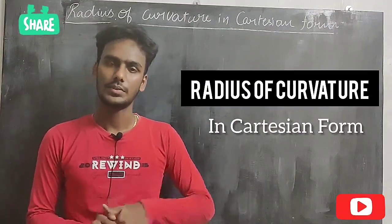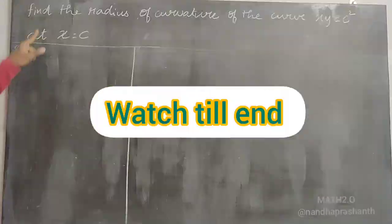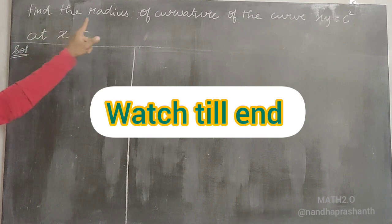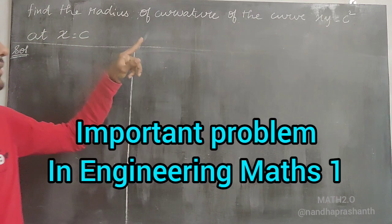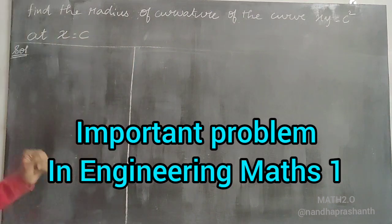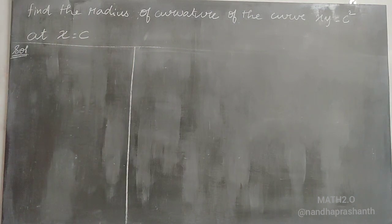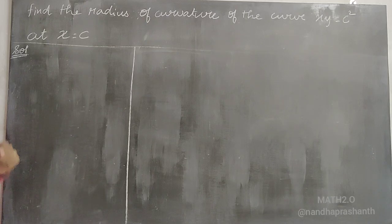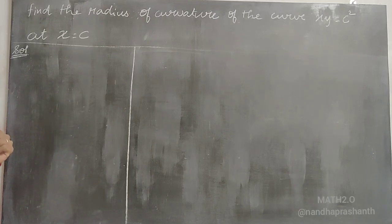Subscribe to our channel. Find the radius of curvature of the curve xy is equal to c square, at x is equal to c.